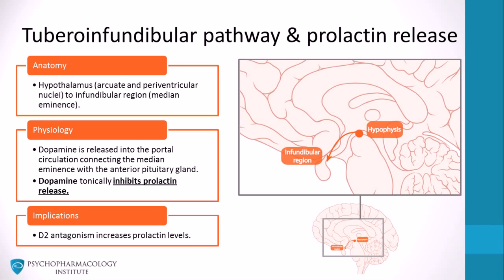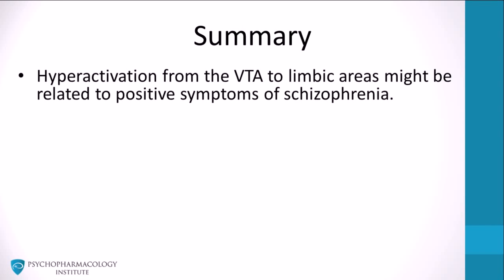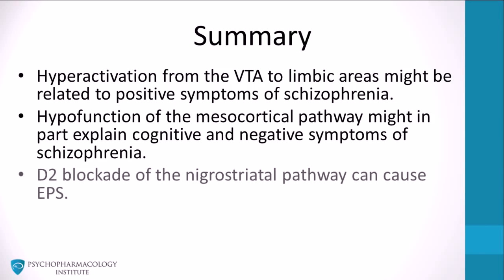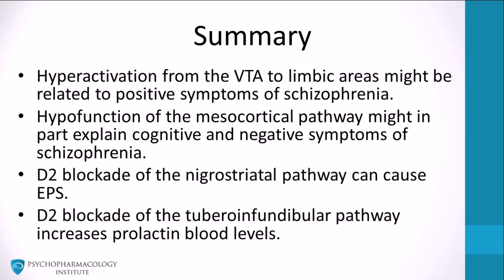In summary, hyperactivation from the ventral tegmental area to limbic areas might be related to positive symptoms of schizophrenia. Hypofunction of the mesocortical pathway might in part explain cognitive and negative symptoms of schizophrenia. D2 blockade of the nigrostriatal pathway can cause extrapyramidal symptoms, and D2 blockade of the tuberoinfundibular pathway increases prolactin blood levels.